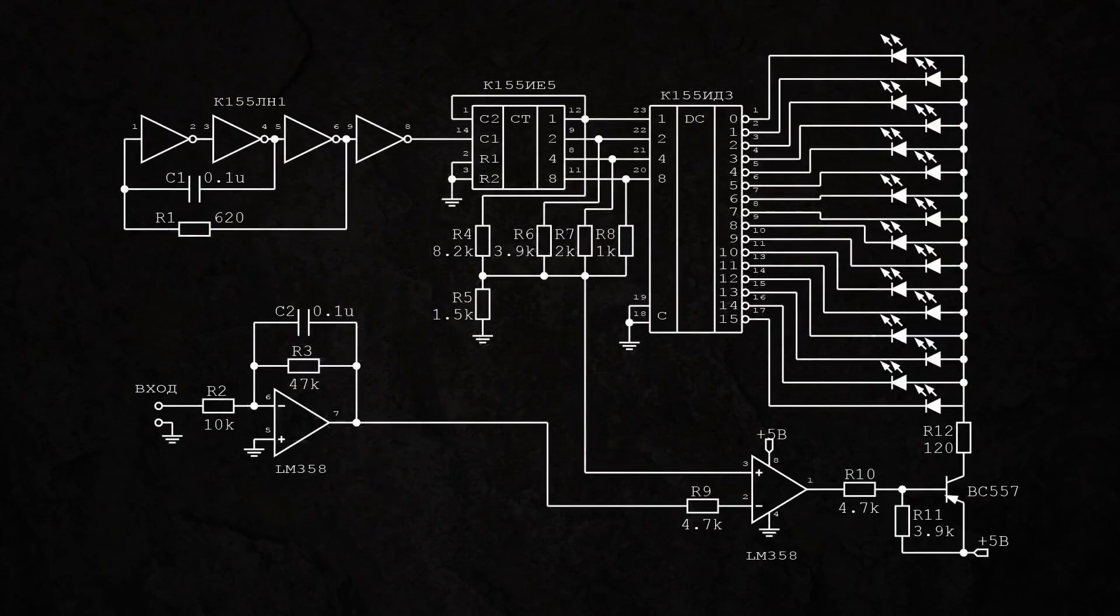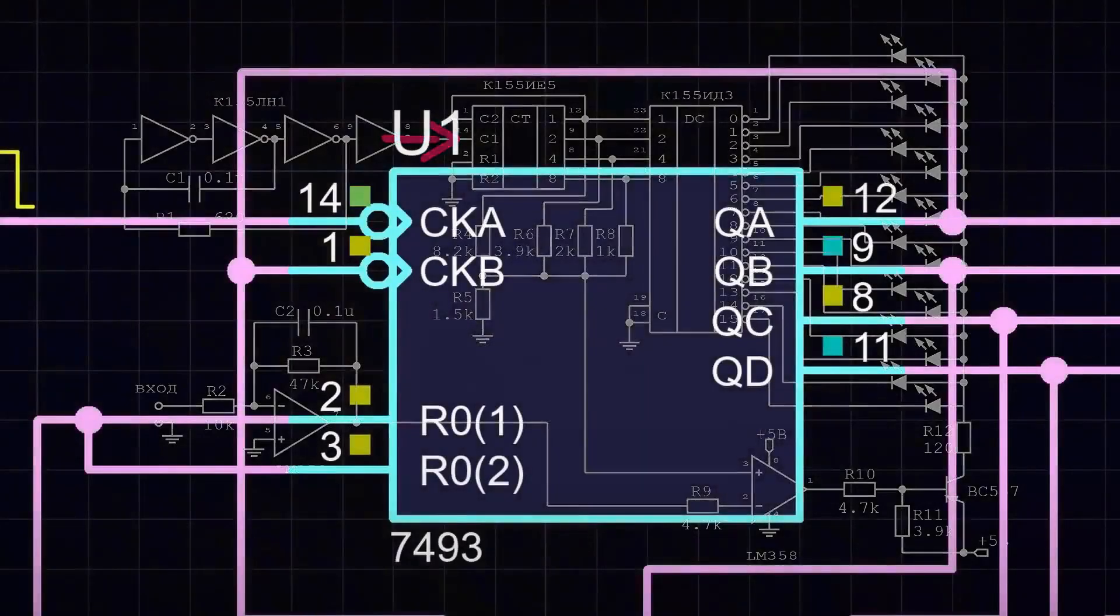After generating the clock signal, we feed it to the K155IE5 counter, which counts up to 16 in an endless loop.